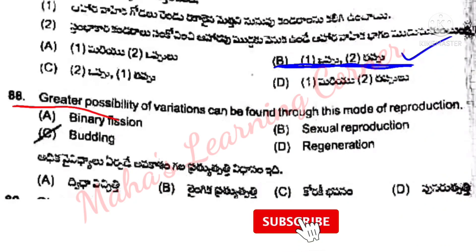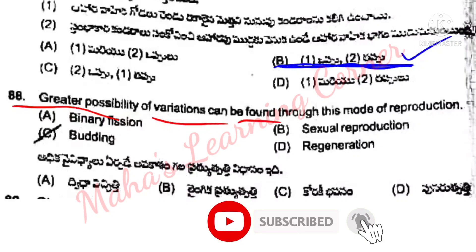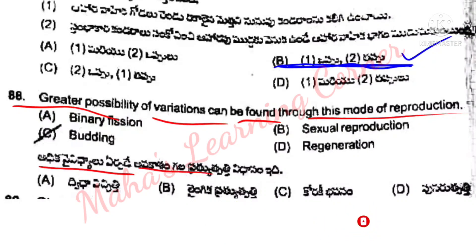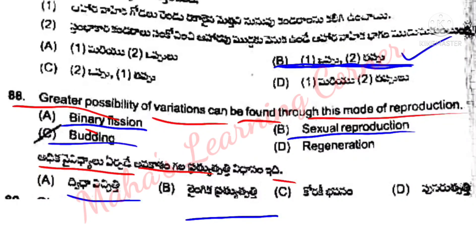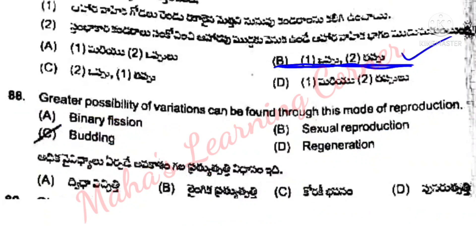Next: Greater possibility of variations can be found through this mode of reproduction. Option B is the correct answer.